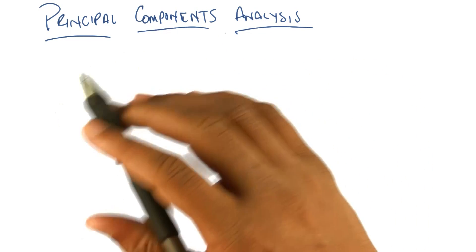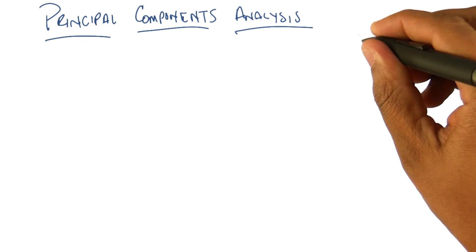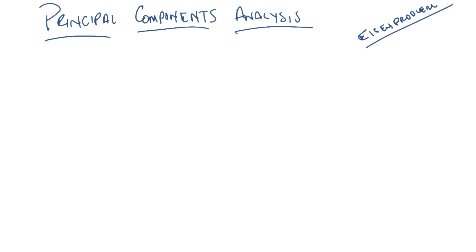Okay, so principal components analysis has a long history. It's a particular example of something called an eigenproblem, which you either already know what that means or you don't. If you don't, then it means you haven't read the material that we've given you, so I'm going to ask you to do that. But whether you have or have not, let me just give you an idea of what principal components analysis actually does.